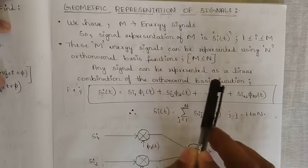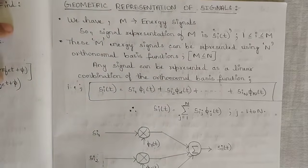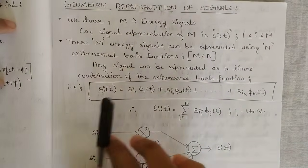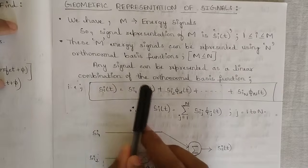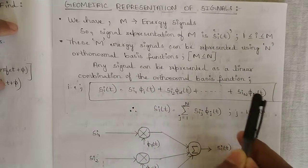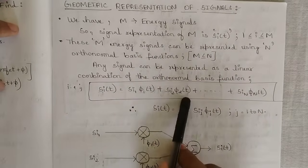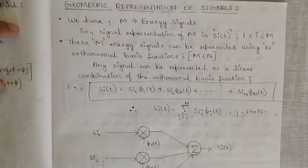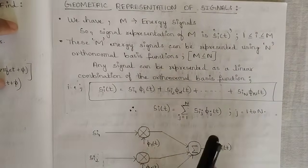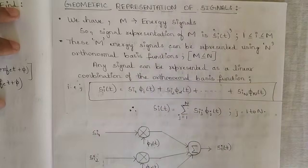Any signal can be represented as a linear combination of the orthonormal basis functions. If we consider any signal SI of T, it can be represented as SI of T equals SI₁φ₁(T) + SI₂φ₂(T) + ... + SIₙφₙ(T). This can be written in short as SI(T) = summation from J=1 to N of SI_J · φ_J(T), where J varies from 1 to N.